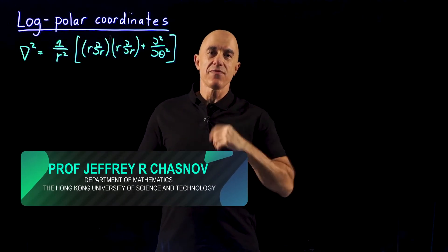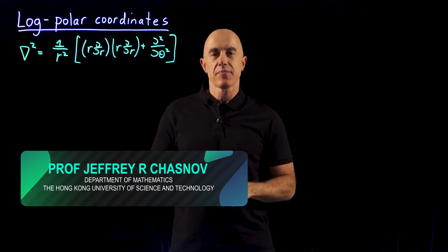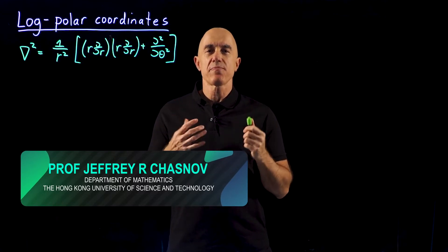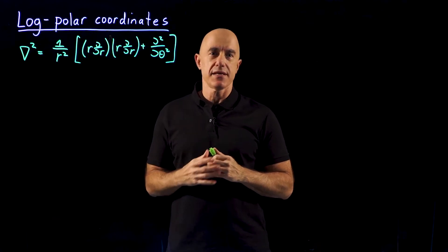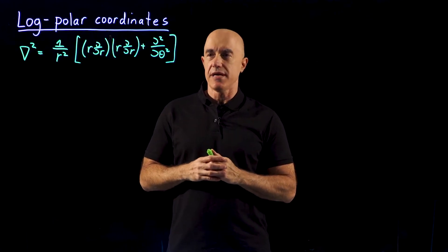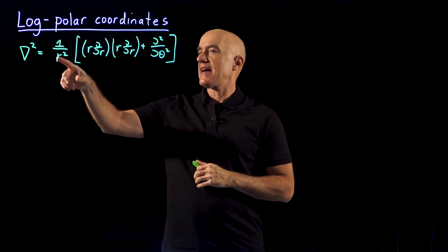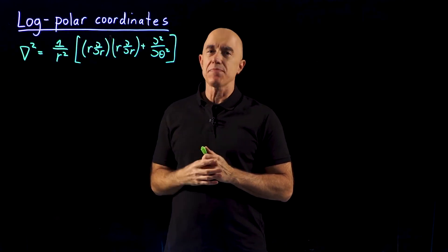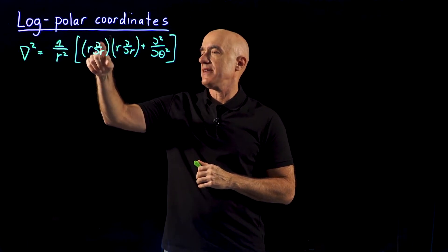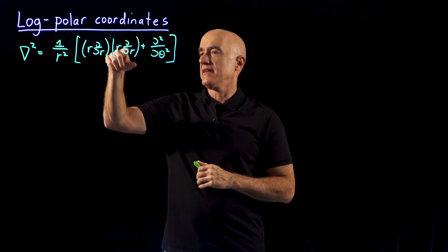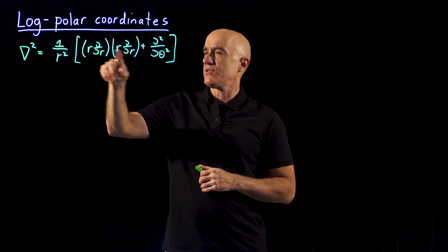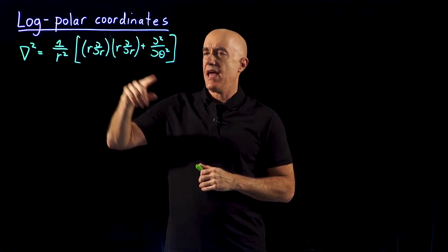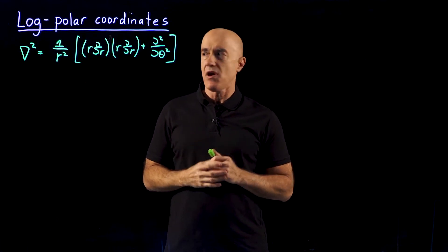We have our governing equations in polar coordinates, but one of the problems with polar coordinates is that we have this Laplacian operator in our equation and it has this somewhat complicated form: R, D, D, R, R, D, D, R. It would be much easier if this was just a second derivative of some variable.